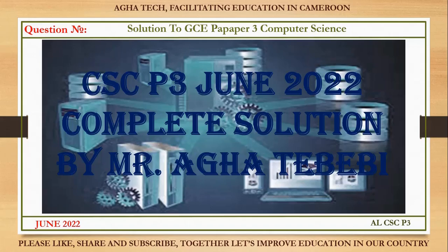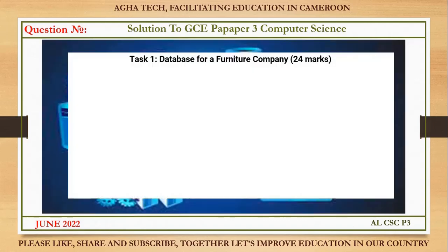Hello guys, welcome back to my YouTube channel. Today we'll be answering Computer Science Paper 3, June 2022. Let's go to the first question. Task one is on a database for a furniture company, worth 24 marks.